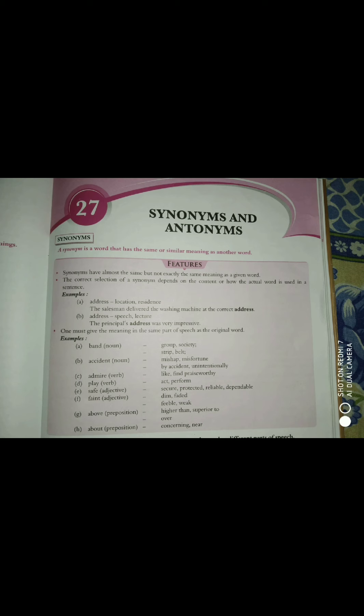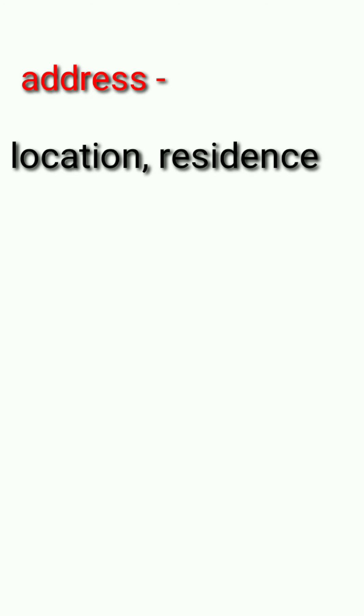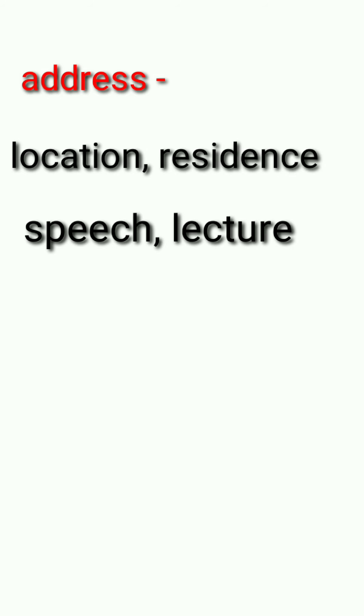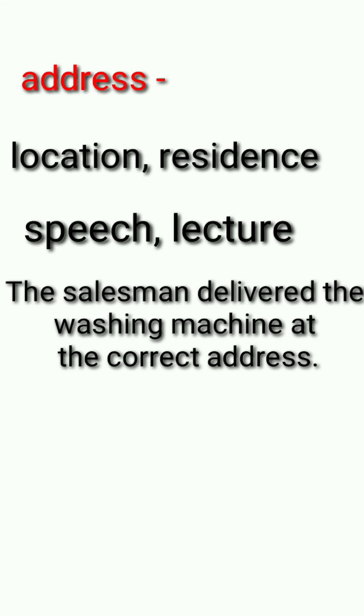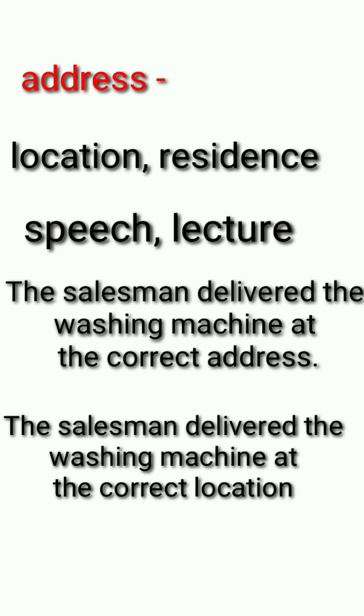Let's take one example to understand this concept clearly. The word 'address' means location or residence. Another meaning of the same spelling 'address' is speech or lecture. See the use of the word address in the sentence: 'The salesman delivered the washing machine at the correct address.' If we replace the word address here with 'location,' the sentence would be: 'The salesman delivered the washing machine at the correct location.' This is correct.